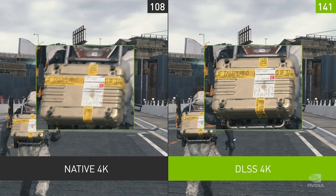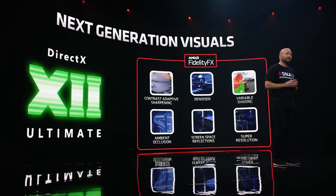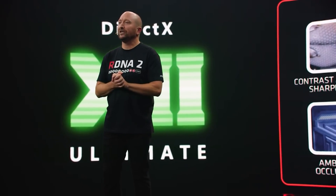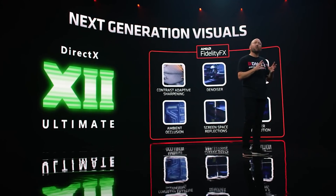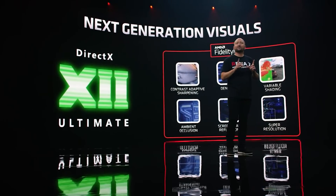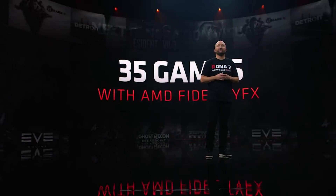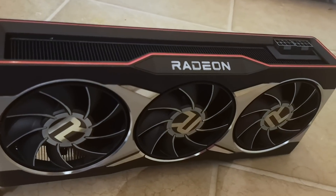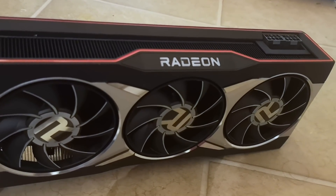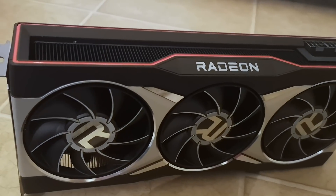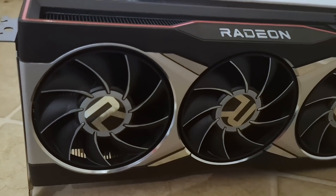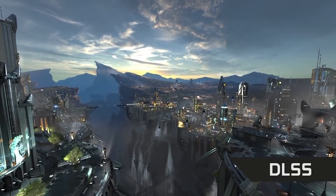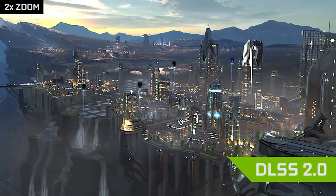AMD doesn't seem to utilize the same technology — it seems to be upsampling basically in real time. You can think of it more along the lines of temporal upscaling on consoles. It's not exactly like that, but that's basically how it happens in real time. Although it's still utilizing machine learning, it's basically using lower precision operations on the GPU to upsample from lower resolution. There is still a bit of confusion as to exactly how it works.